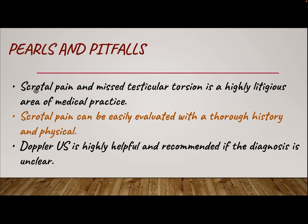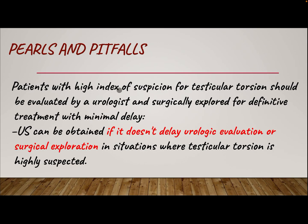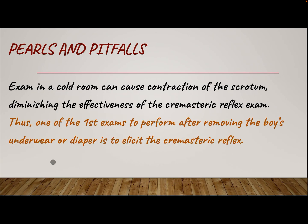Pearls and pitfalls. Scrotal pain and missed testicular torsion is a highly litigious area of medical practice. Scrotal pain can be well evaluated with a thorough history and physical examination. Doppler ultrasound is highly helpful and recommended if the diagnosis is unclear. Patients with a high index of suspicion for testicular torsion should be evaluated by a urologist with surgical exploration for definitive treatment and minimal delay. Ultrasound can be obtained only if it does not delay urological evaluation or surgical exploration when testicular torsion is highly suspected. Examination in a cold room can cause contraction of the scrotum, diminishing the effectiveness of the cremastric reflex exam; thus, eliciting the cremastric reflex should be one of the first steps after removing the boy's underwear or diaper.